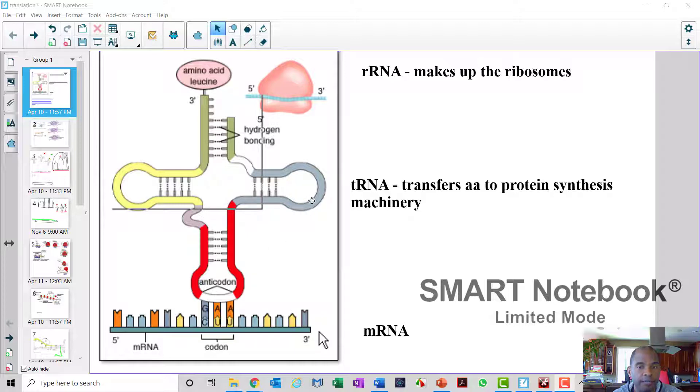That's your transfer RNA. And then finally, the other rRNA that is responsible for the production of proteins is the ribosomal RNA. And the ribosomal RNA is what makes up the ribosomes. And the ribosomes are the machinery that allow the whole translation event to occur.